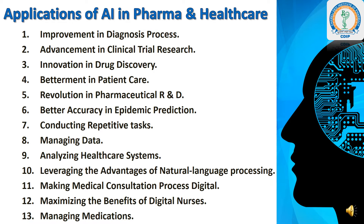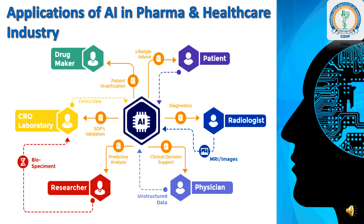The various applications of artificial intelligence in pharma and healthcare sector are: 1. Improvement in diagnosis process, 2. Advancement in clinical trial research, 3. Innovation in drug discovery, 4. Betterment in patient care, 5. Revolution in pharmaceutical research and development, 6. Better accuracy in epidemic prediction, 7. Conducting repetitive tasks, 8. Managing data, 9. Analyzing healthcare systems, 10. Leveraging the advantages of natural language processing, 11. Making medical consultation process digital, 12. Maximizing the benefits of digital nurses, 13. Managing medications.